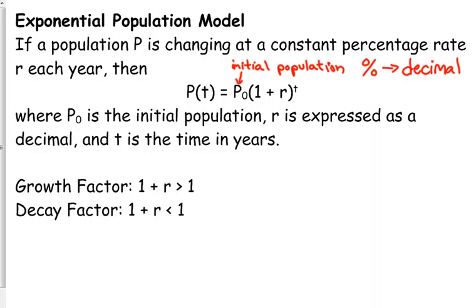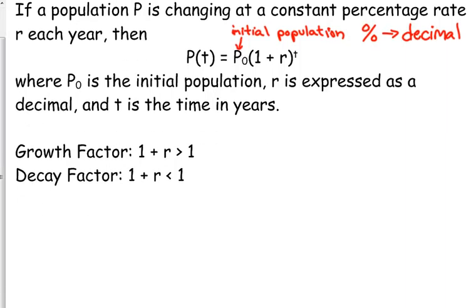Obviously, relating back to what we were going to talk about, if that base, if one plus r is greater than one, you're talking about a growing population. If one plus r is less than one, you're talking about a decreasing population. And that's your decay factor.